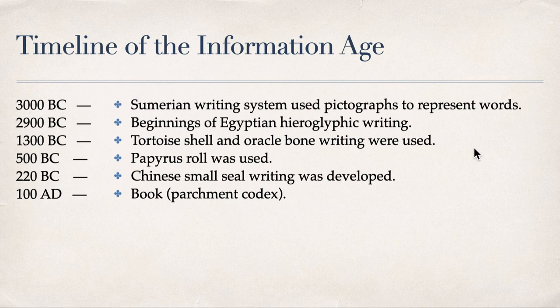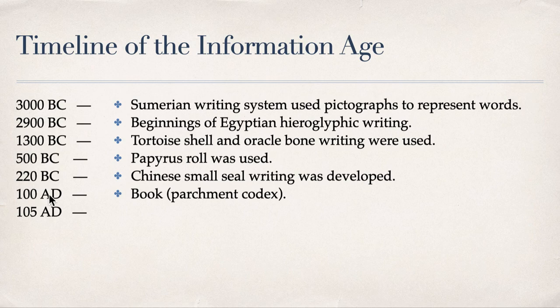The codex is an essential ancient book consisting of one or more quires of sheets of paper or parchment folded together to form a group of leaves or pages — essentially what we call a book. In 105 AD, since we are now in Anno Domini, the numbers are increasing.